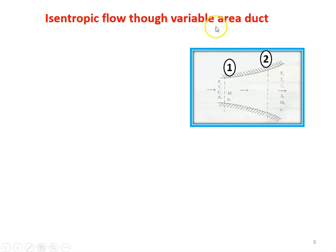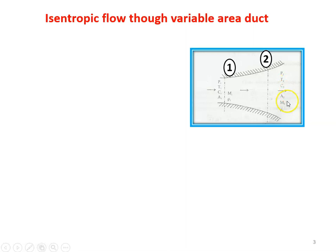Isentropic Flow through Variable Area Duct. This is the variable area duct — the area for the flow is constantly decreasing in this diagram. For the general statement, for a variable area, the cross-sectional area for the flow may increase or decrease. We have two sections: inlet (section 1) and outlet (section 2). At section 1, the properties are pressure P1, temperature T1, velocity C1, area A1, density Rho1, and Mach number M1. Similarly, at the outlet section, the properties are P2, T2, C2, A2, M2, and Rho2. We are going to determine the properties between inlet and outlet for Isentropic Flow in the Variable Area Duct.